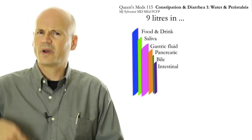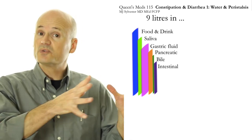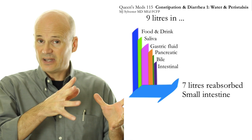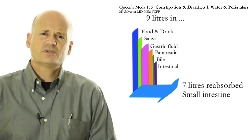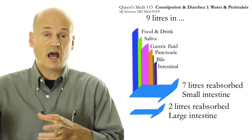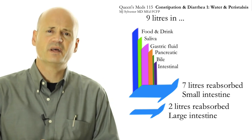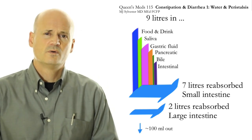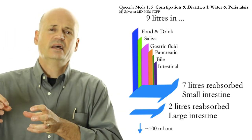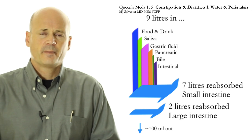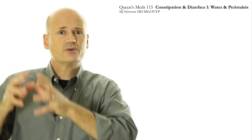The intestines themselves contribute another liter, and all that adds up to about nine liters. But nine liters doesn't all the way through — so where does it go? Incredibly, your small intestine reabsorbs seven of those liters back into your bloodstream, and the large intestine reabsorbs about another two liters, so that all you have left are maybe 100 to 200 milliliters that come out with your feces. Ninety-nine percent of the water is reabsorbed.